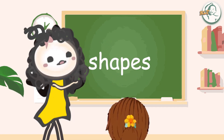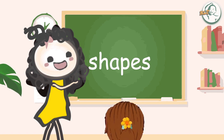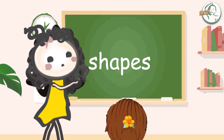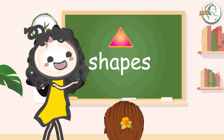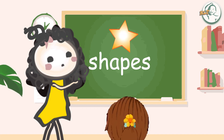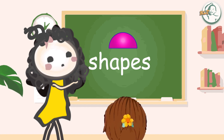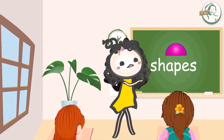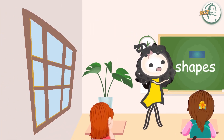Good morning. Today we are going to learn about different shapes. We can see various shapes such as squares, circles, triangles, stars, and more around us every day. These shapes are two-dimensional geometric figures that have specific properties and characteristics.